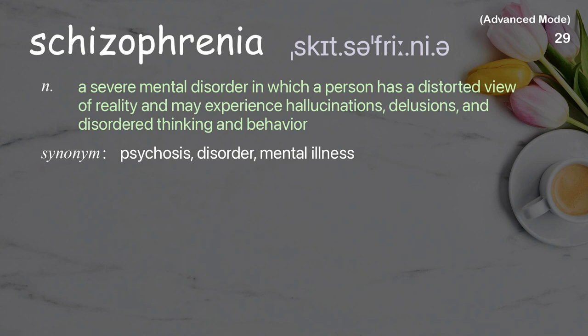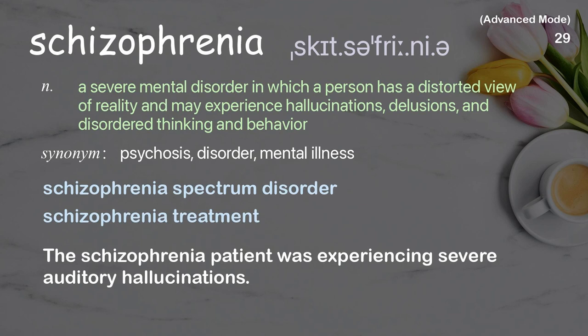Schizophrenia: a severe mental disorder in which a person has a distorted view of reality and may experience hallucinations, delusions, and disordered thinking and behavior. Examples: schizophrenia spectrum disorder, schizophrenia treatment. The schizophrenia patient was experiencing severe auditory hallucinations.